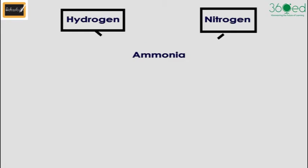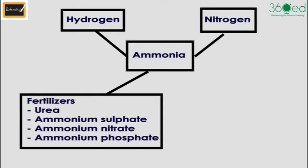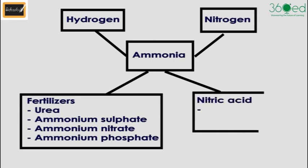Nitrogen is mainly used in the manufacture of ammonia. Ammonia is mainly used to produce fertilizers such as urea, ammonium sulfate, ammonium nitrate, and ammonium phosphate. Nitric acid is mainly used to produce explosives and dyes.